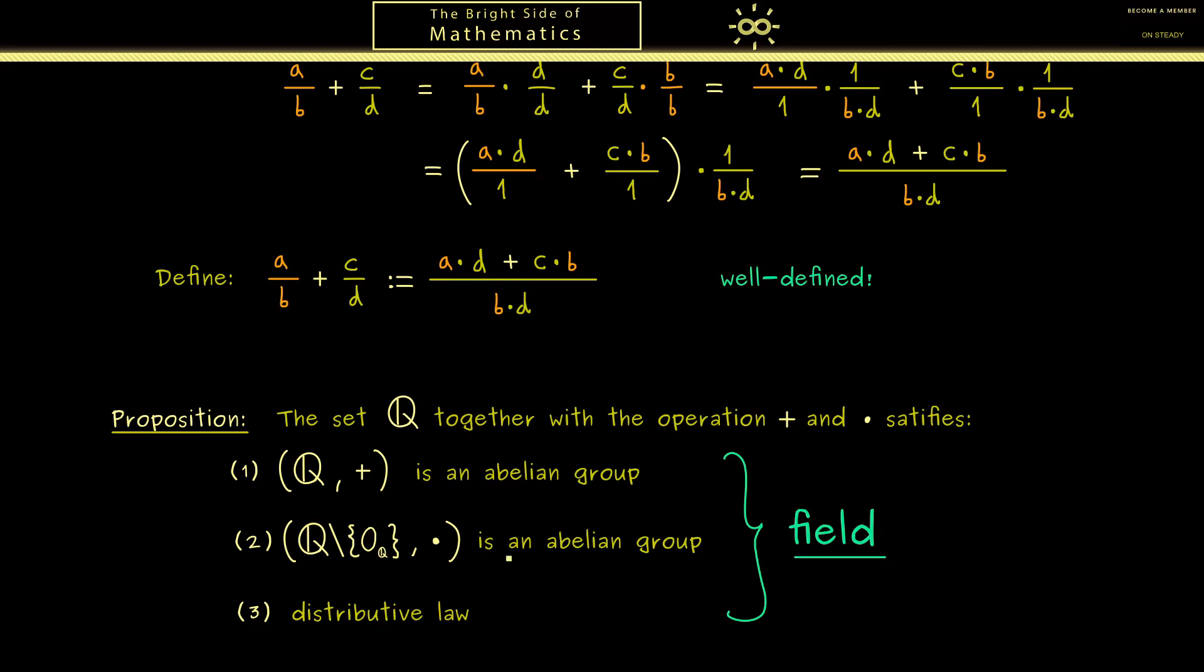However it ends not here. The rational numbers have even more properties. For example you can ask what happened to the order we had for the natural numbers. Hence let's talk about this in the next video. I hope I see you there. Have a nice day. Bye.